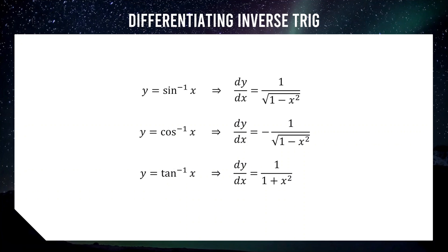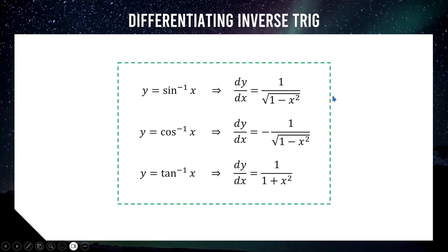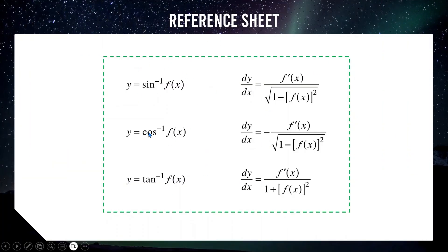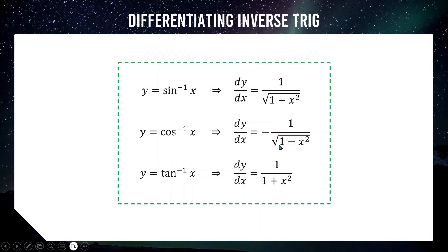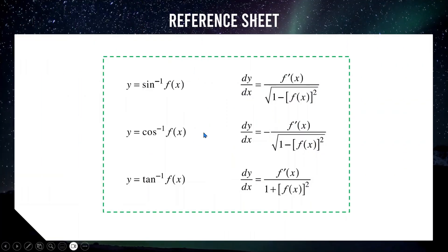These are our starting formulas. The ones on the HSC reference sheet are more generic, expressed in terms of f(x) instead of x. Where there's an x or x squared, they've replaced it with f(x), and on top you've got f'(x). This is just reminding you to apply the chain rule — when you differentiate a function of a function, multiply your answer by the derivative of the inside function.